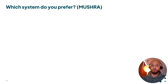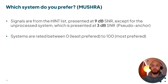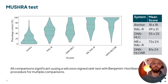Similarly, we conducted a MUSHRA test. We used utterances from the Danish HINT test, presented at 9 dB SNR, and included a pseudo-anchor which was the unprocessed system at 3 dB SNR. The systems were rated between 0, indicating the least preferred system, and 100, indicating the most preferred system. We found that the joint hearing loss compensation and noise reduction system was the most preferred. Looking at the smoothed histograms, we see a very skewed distribution where most people preferred the joint system most of the time. In general, people also preferred the DNN-based hearing loss compensation over NAL-R, and all comparisons were significant after correction.